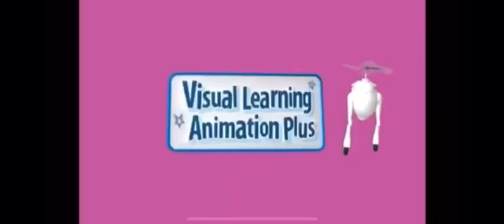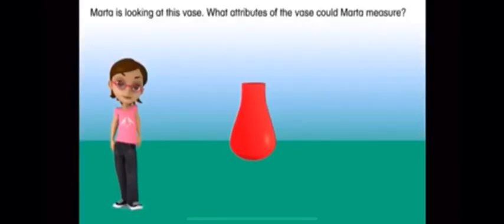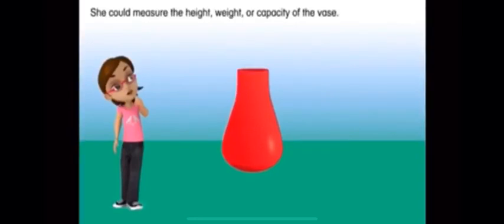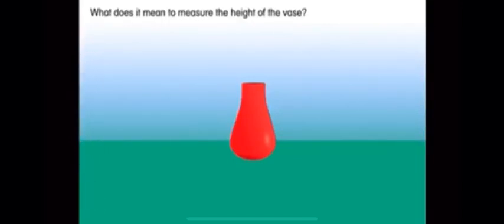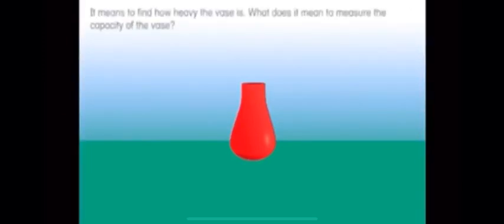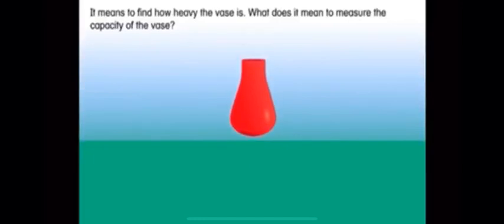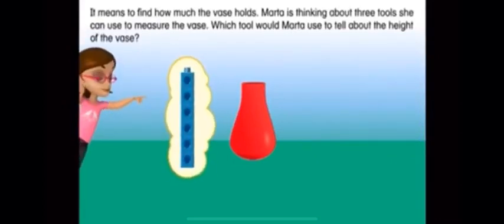Marta is looking at this vase. What attributes of the vase could Marta measure? She could measure the height, weight, or capacity of the vase. What does it mean to measure the height of the vase? It means to find how tall the vase is. What does it mean to measure the weight of the vase? It means to find how heavy the vase is. What does it mean to measure the capacity of the vase? It means to find how much the vase holds.